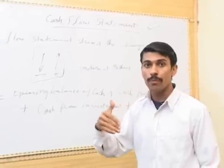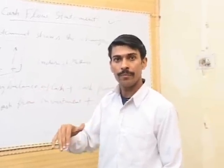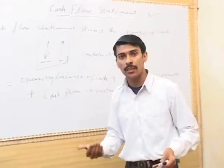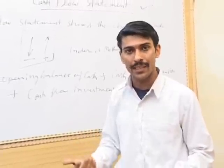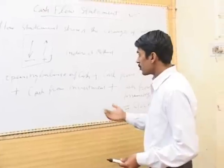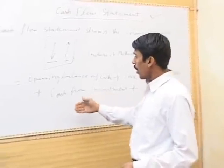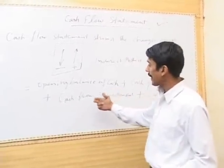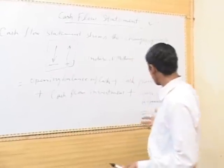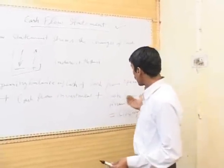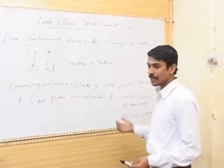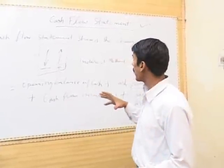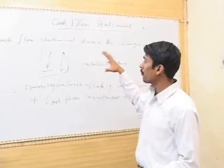Each component can be either positive or negative. If cash from operations is negative, it means there is a net loss in the form of cash. We also determine the amount of net cash from investment and the amount of net cash from financing — all these are very important for finding the cash flow statement.